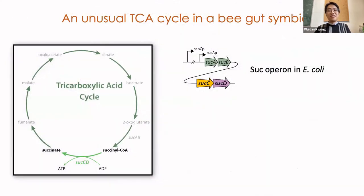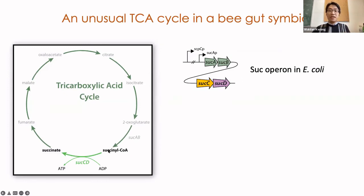In the standard TCA cycle, this enzyme is encoded by two proteins, SucC and SucD, which form a heterodimer. Together, this converts succinyl-CoA into succinate, and these genes are necessary to complete the TCA cycle. Strains with knockouts of these genes will not be able to grow normally, instead having to rely on glycolysis and fermentation. So the lack of this key enzyme is highly suspicious in an aerobic organism, and strongly hinted at the existence of an unusual metabolism.